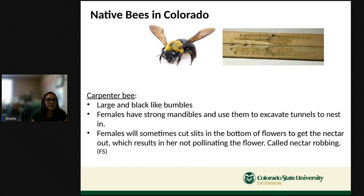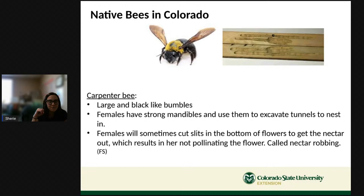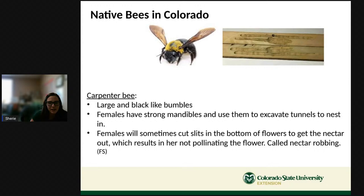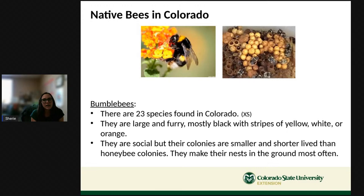The carpenter bee is really big, black, and fuzzy. Females have strong jaws to chomp into wood and make tunnels for nesting. They can be 'cheaters' — sometimes a carpenter bee female will cut a slit in the bottom of a flower and take the nectar without picking up pollen. We call that nectar robbing. Bumblebees — we have 23 species native to Colorado — are the classic black-and-yellow bees. Unlike most native bees, bumblebees are social and make nests usually in the ground.